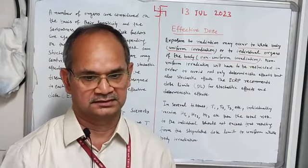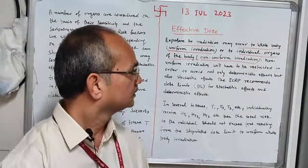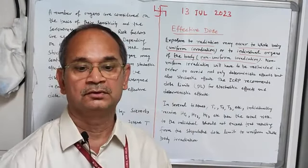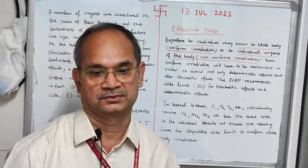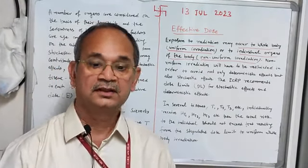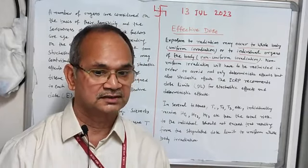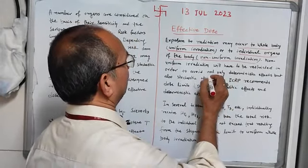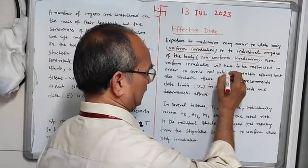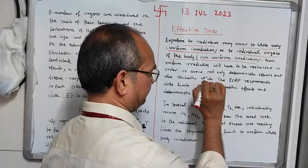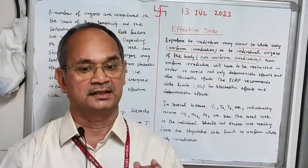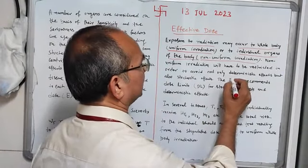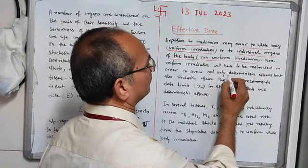Non-uniform irradiation needs to be restricted to the body. Why restrict to the body? Because if we don't restrict it, we face deterministic effects of the body.